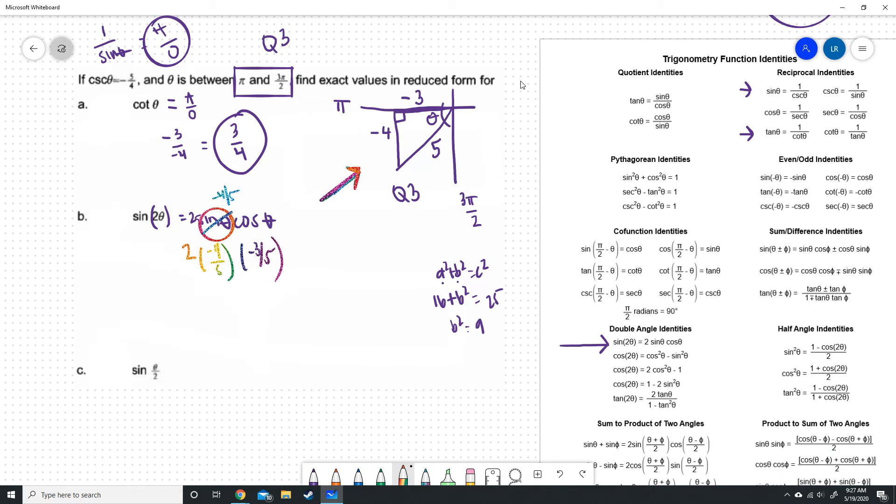Now I'm going to do some math. 2 times negative 4 is negative 8. Negative 8 times negative 3 is positive 24. And then on our denominator, we have 5 and 5. 5 times 5 is 25. So we have 24 over 25. That is what sine of 2 theta is.